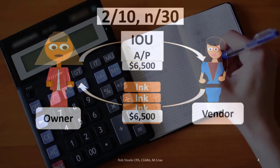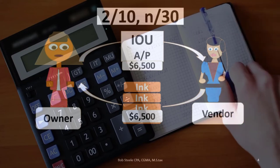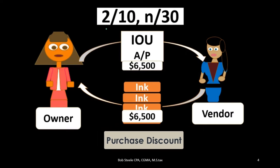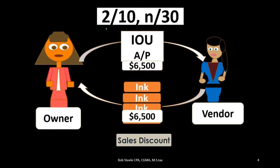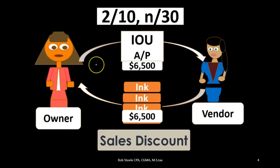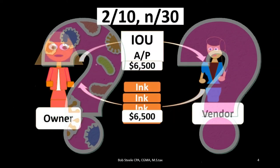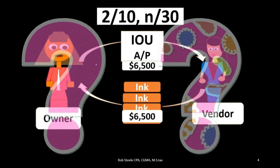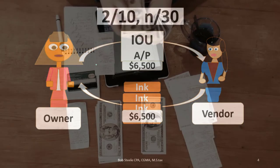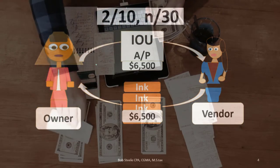Recording the discount can be confusing because students often mix up sales discounts and purchase discounts. A purchase discount reduces the inventory balance, while a sales discount goes to sales returns and allowances. This is a common multiple choice and journal entry question, and a common mistake is failing to reduce inventory by the amount of the discount.